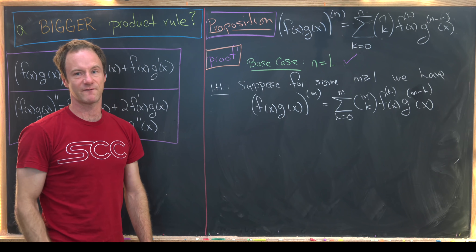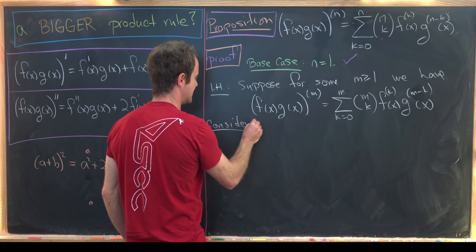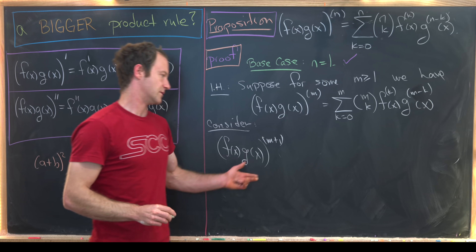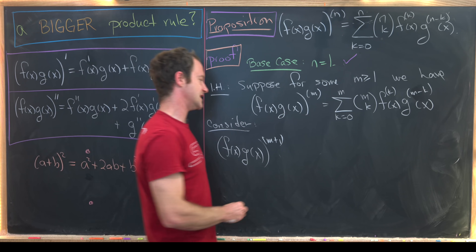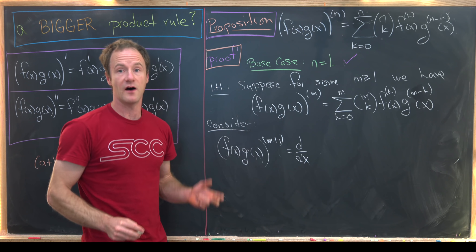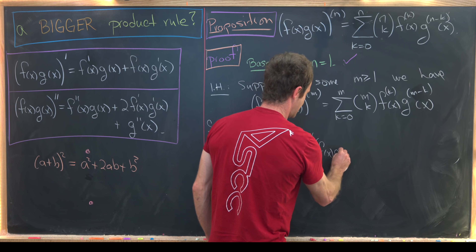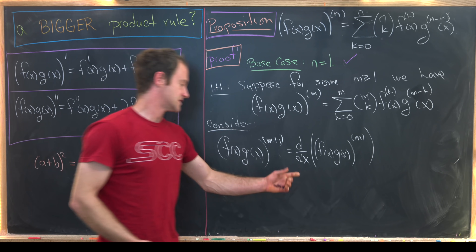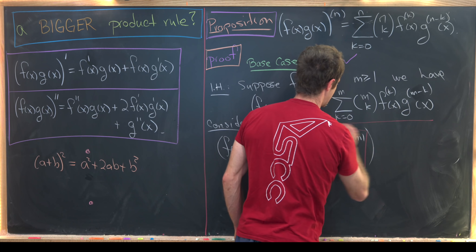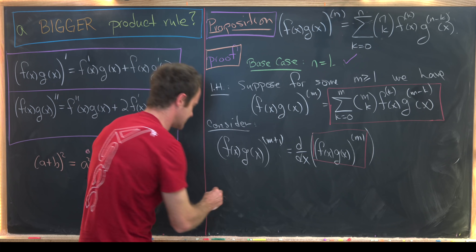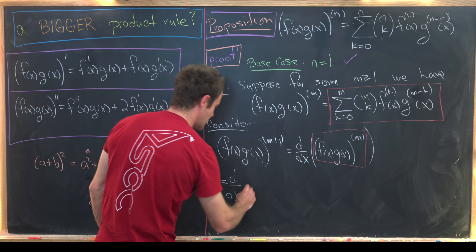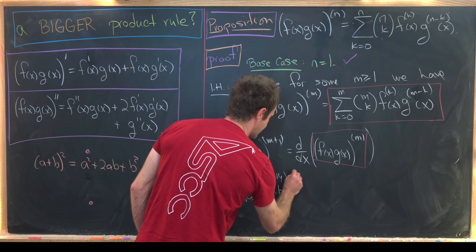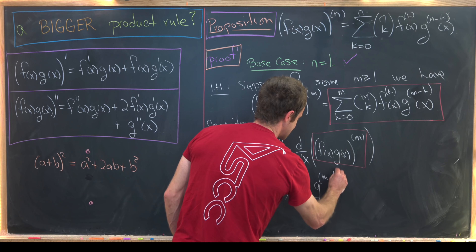Then we want to consider the (m+1)th derivative. We write (f(x)g(x))^(m+1), the (m+1)th derivative, but notice that's just the derivative of the mth derivative. So we can write it as the derivative of the mth derivative, and then apply our induction hypothesis — boxed in red — to replace it with the sum as k goes from 0 to m of (m choose k) times the kth derivative of f times the (m−k)th derivative of g.